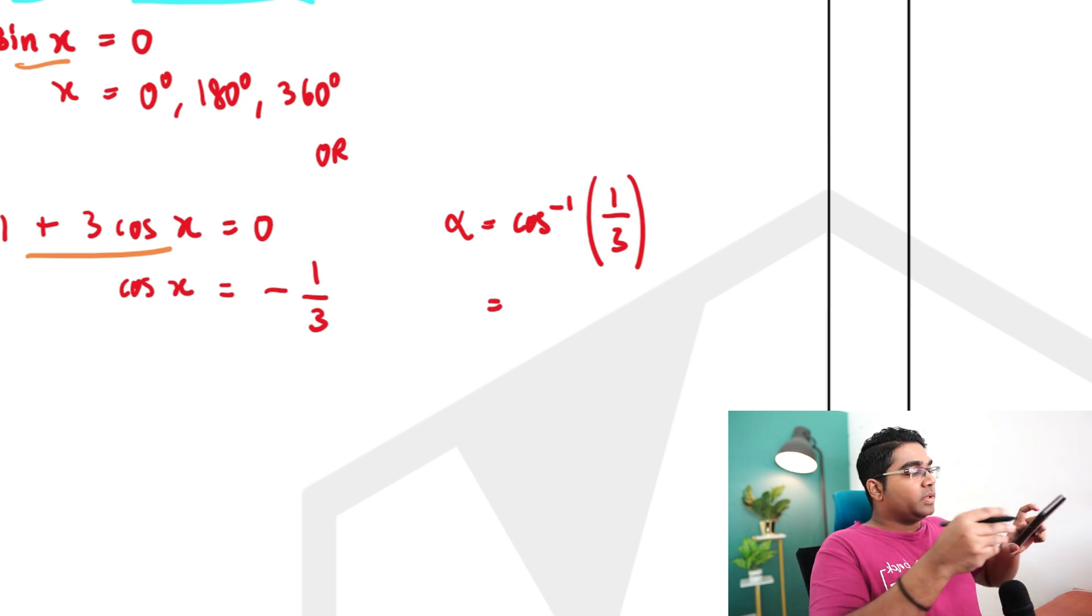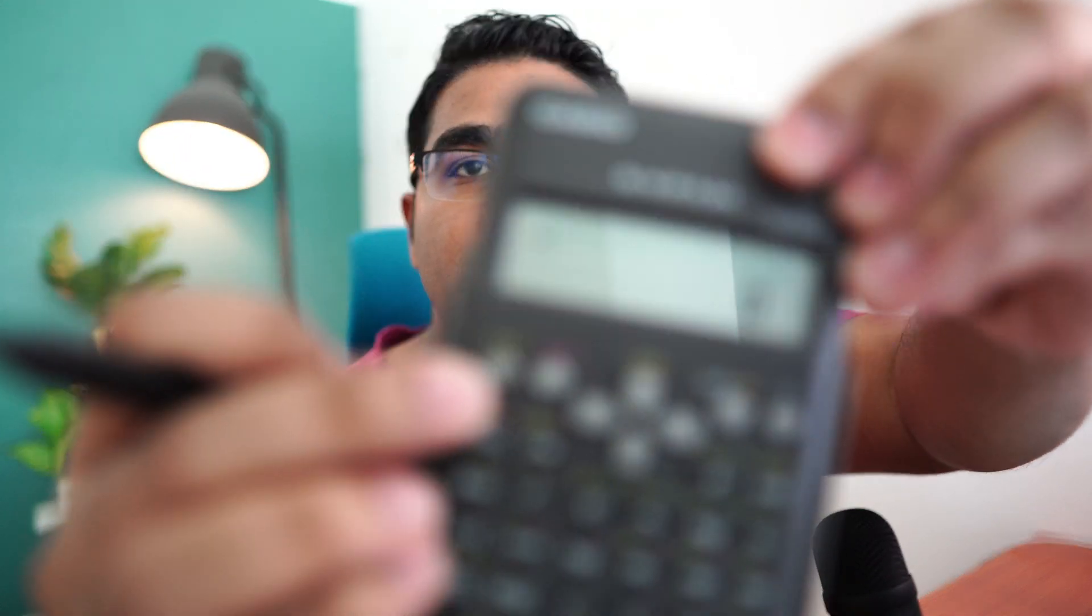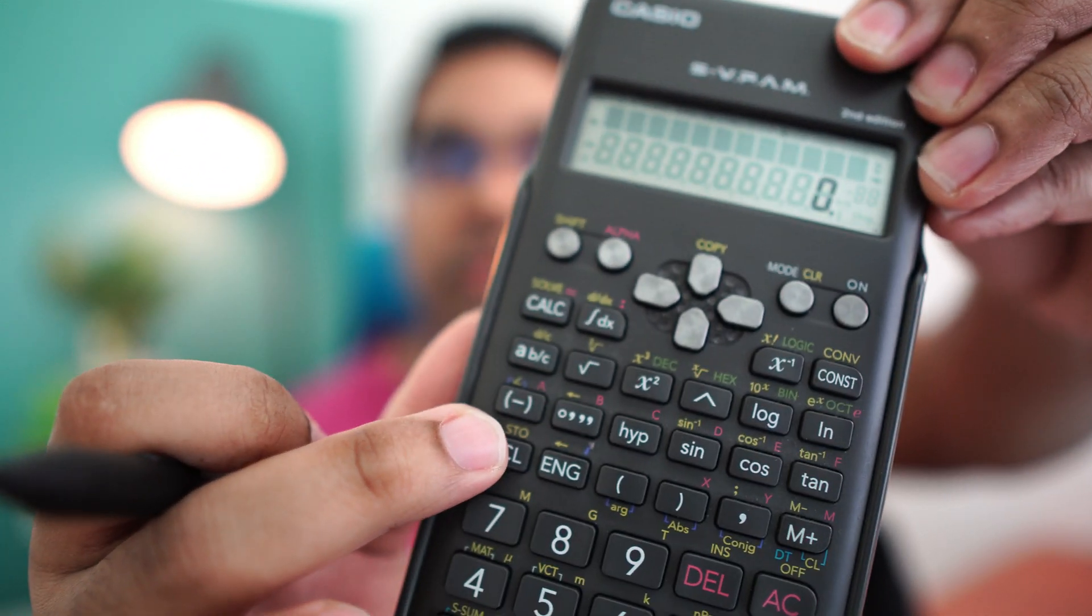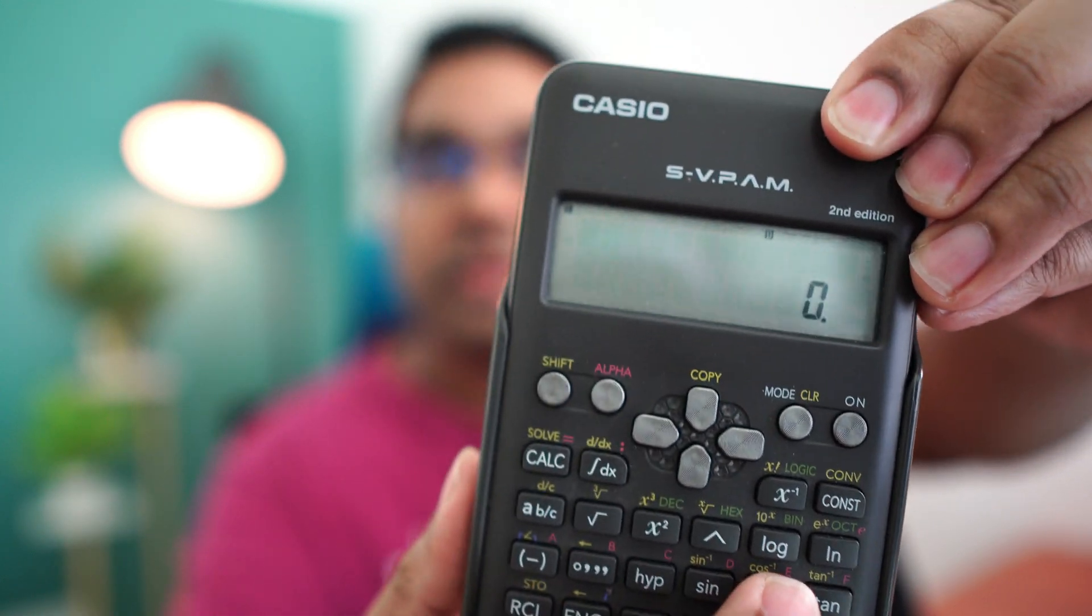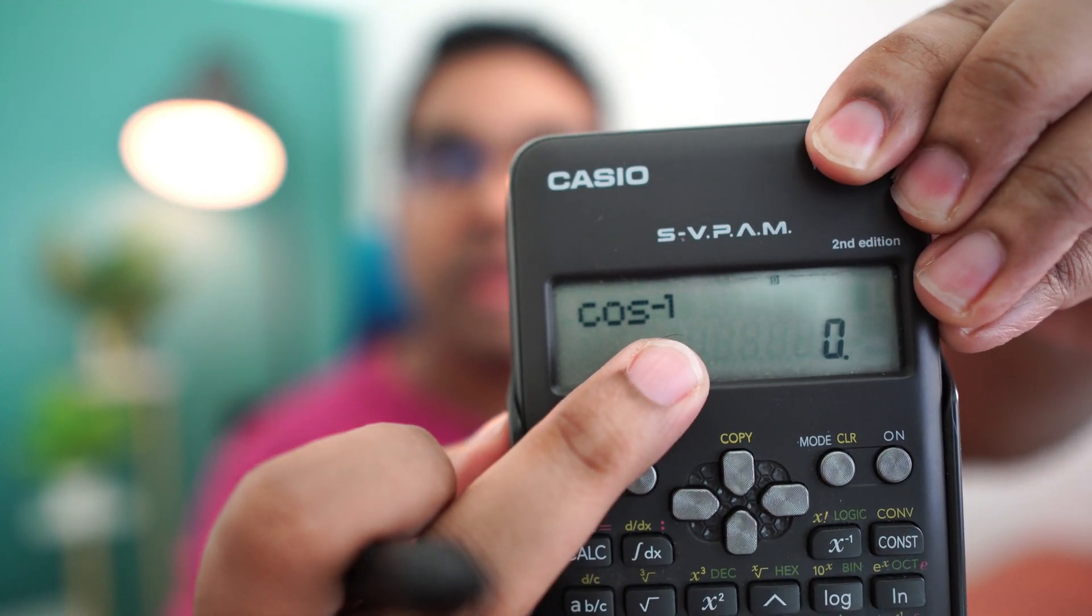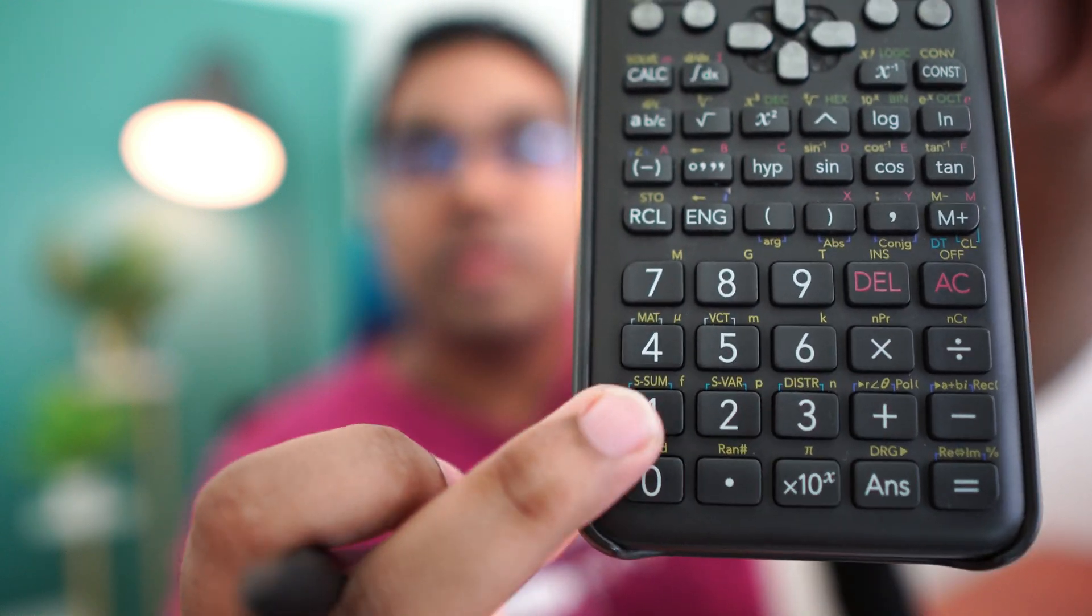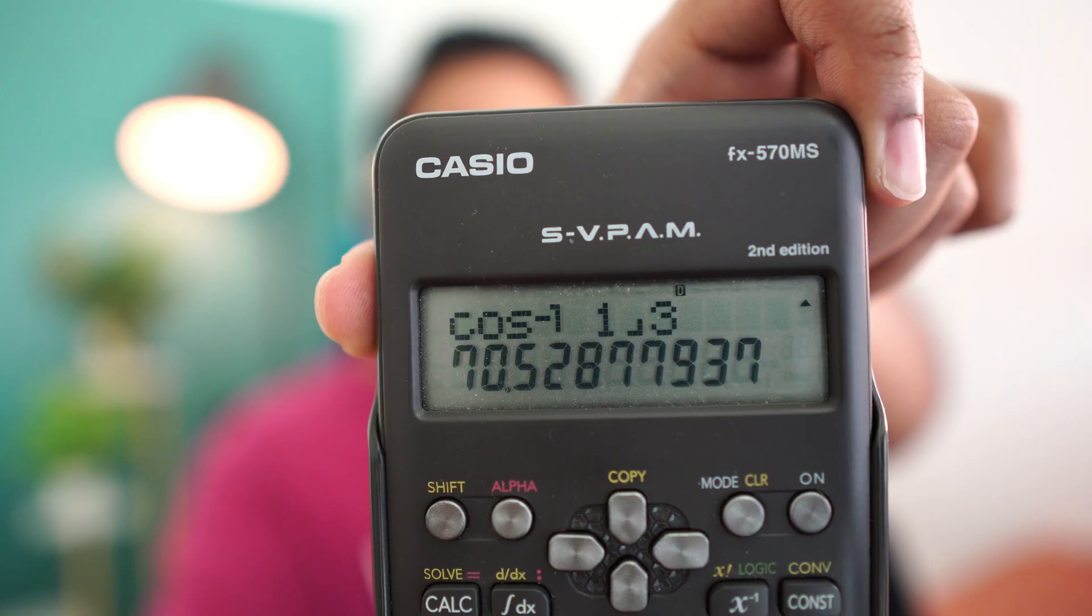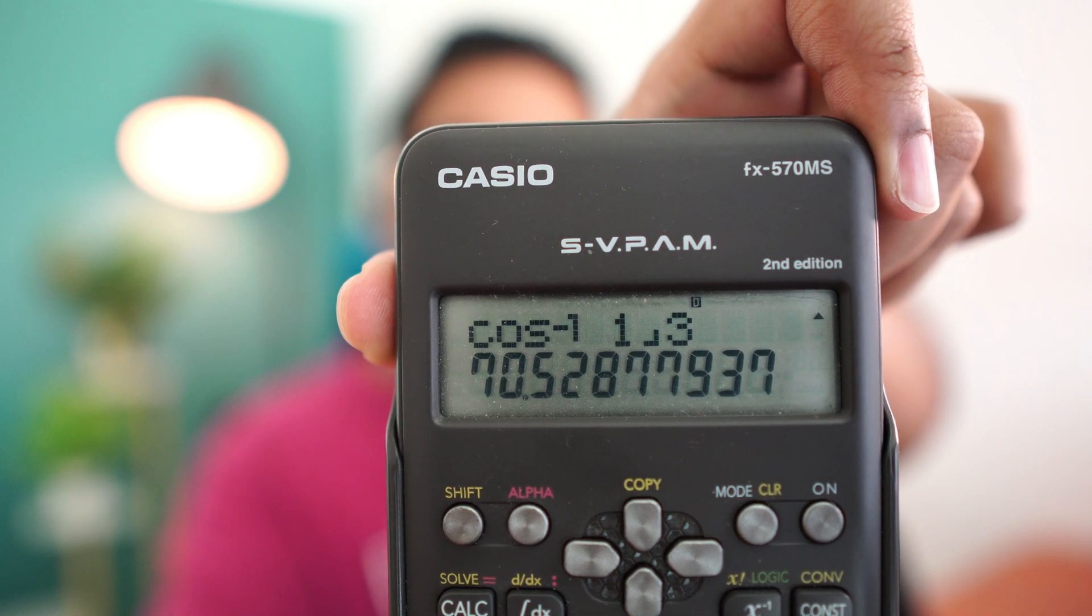So when you are using your calculator, you press shift, this shift and then you press cosine. Because we are doing inverse cos, you press shift cos and then you get this and then you do 1 over 3. So 1 over 3. And you will get your answer. Alpha is 70.5 degrees.